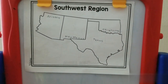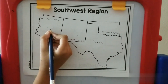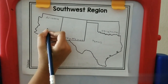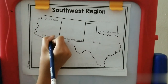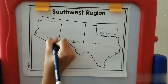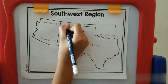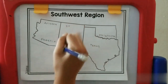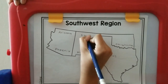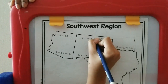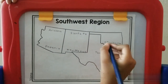So now I'm going to fill the capitals. For Arizona, the capital is Phoenix. For New Mexico, it is Santa Fe. For Oklahoma, it is Oklahoma City.